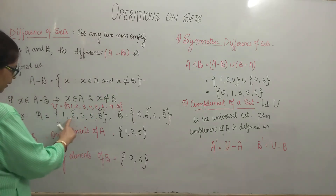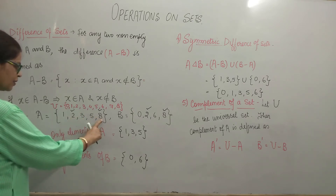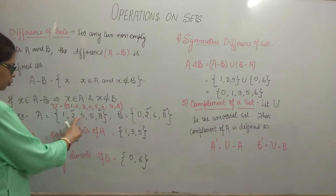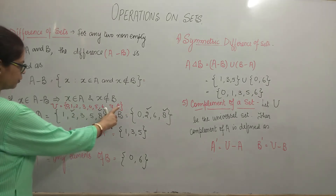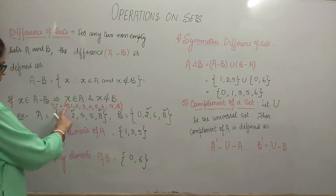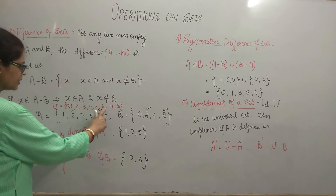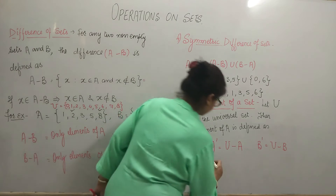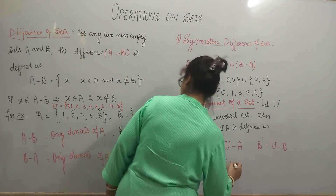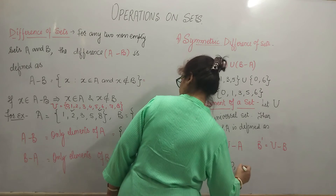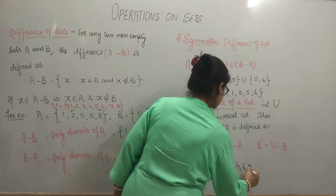A had elements 1, 2, 3, 5 and 8. A ke yeh elements hain, toh in elements ko chhodd dete hain — 1, 2, 3, 5 and 8 ko chhoddiye. Toh jo hamare paas elements aate hain woh hain 0, 4, 6 and 7. These are the elements of A complement.